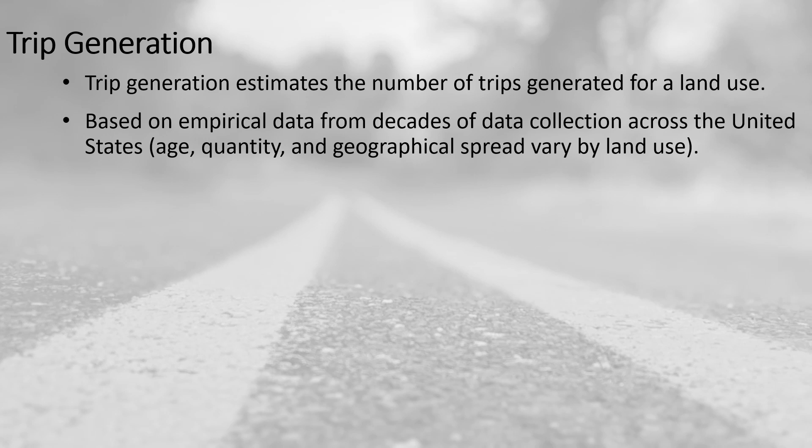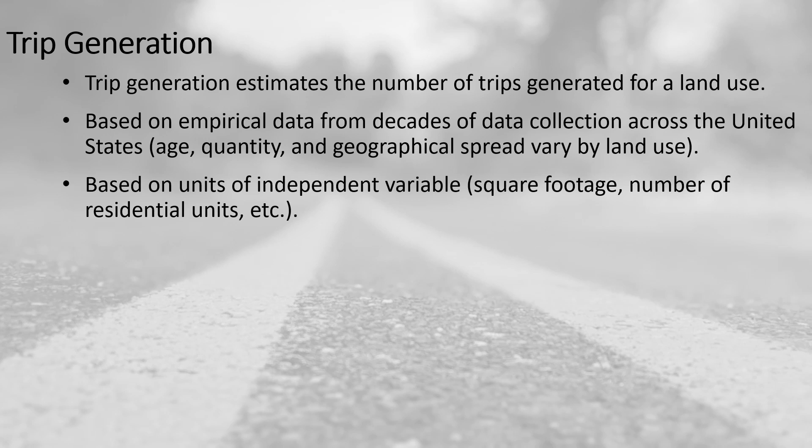Some land use categories have a lot of data points and some have very few, so it really depends on the specific land use how robust that data set is. Trip generation is based on an independent variable. Common measures include the square footage of a facility, the number of residential units, or for a gas station, the number of fueling positions — essentially the key characteristic related to the number of trips generated for a land use.